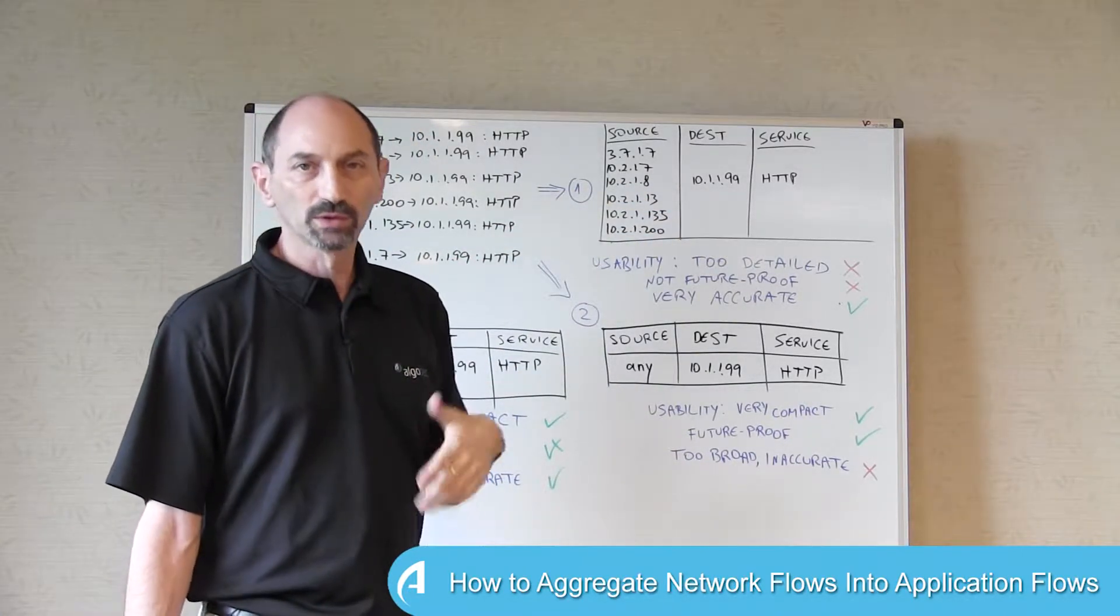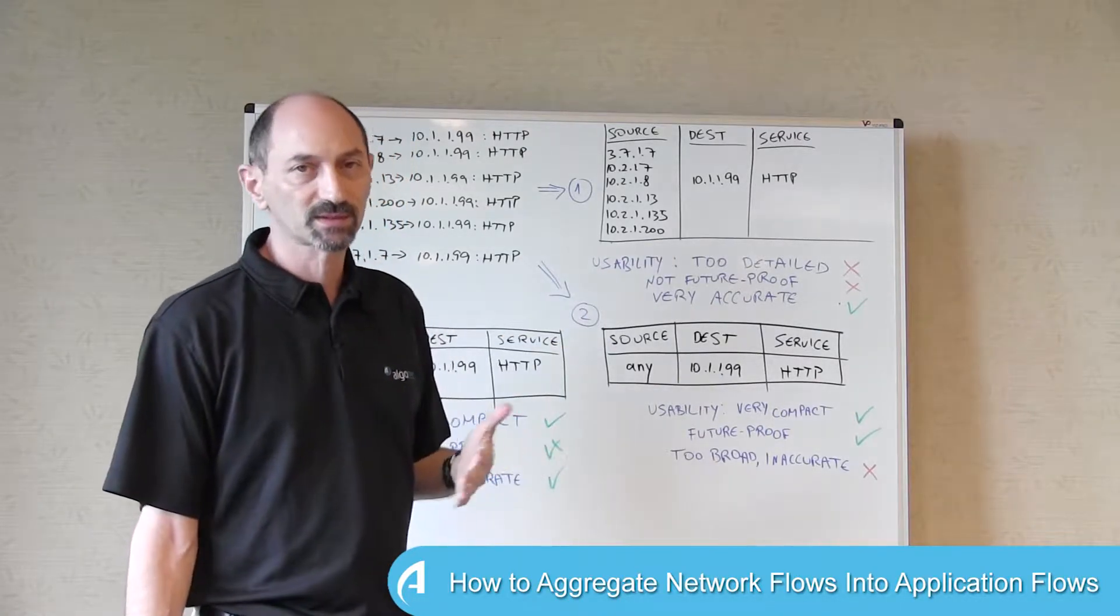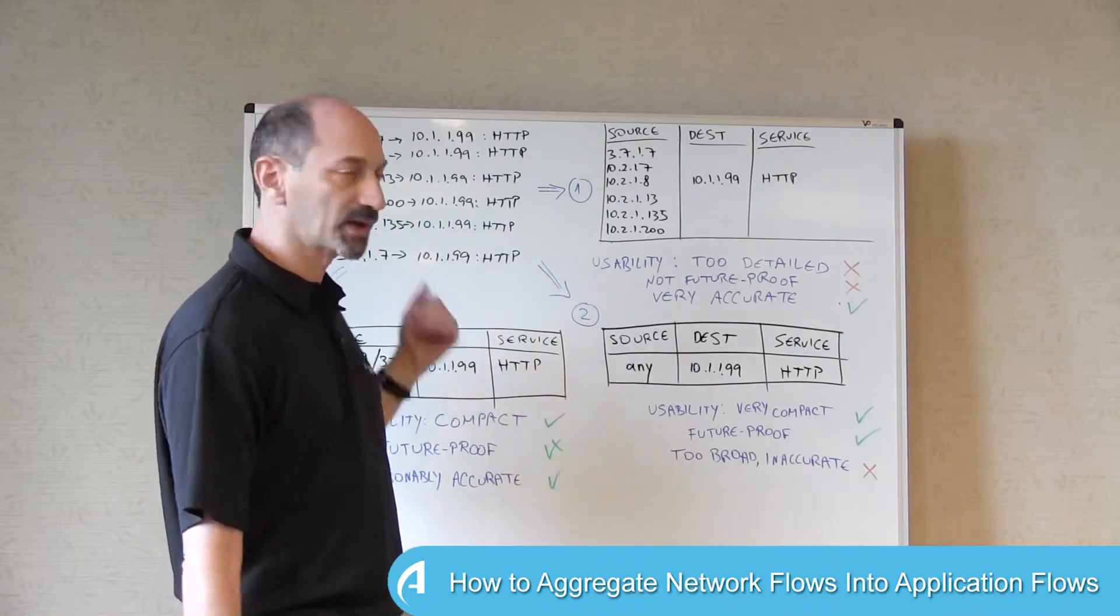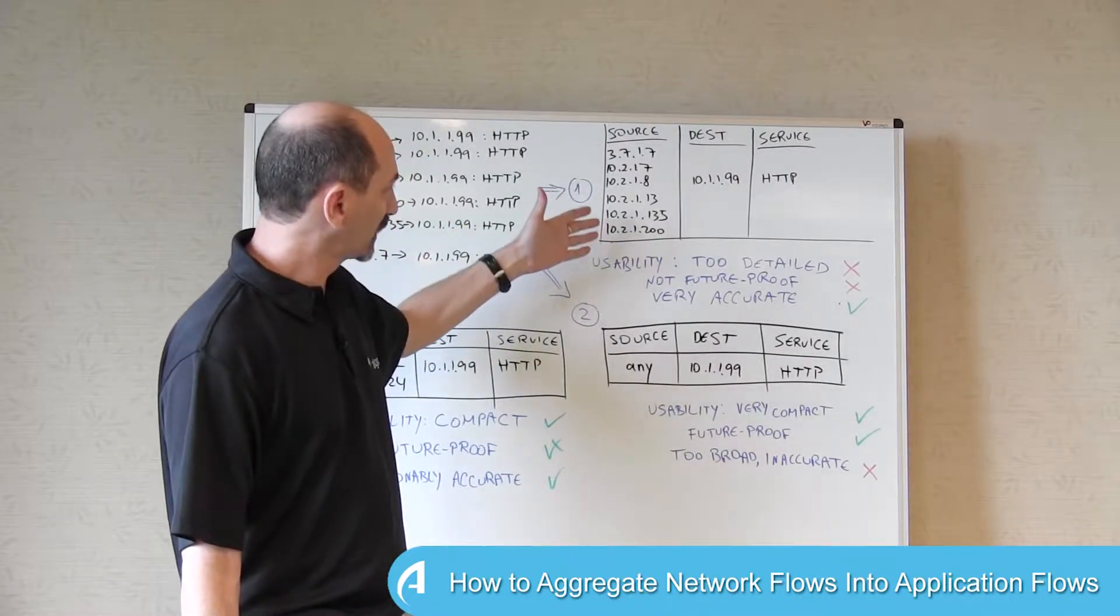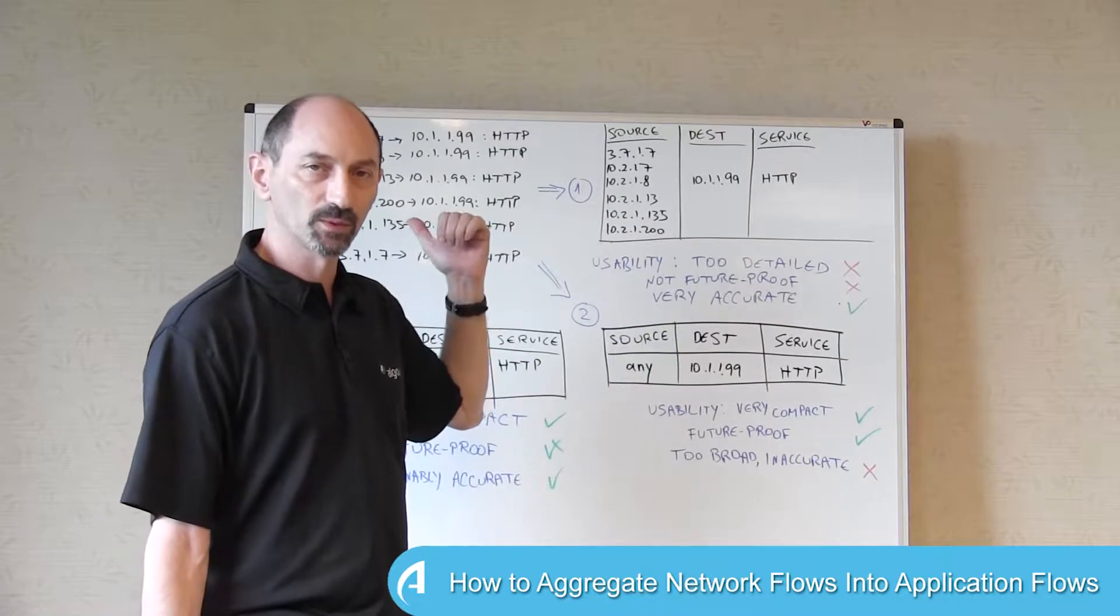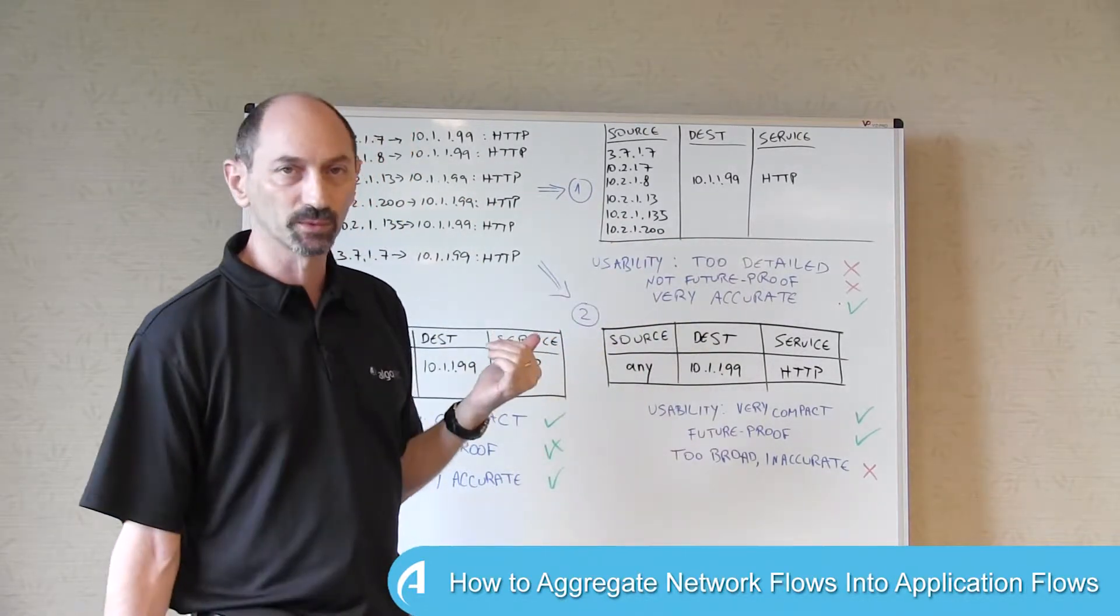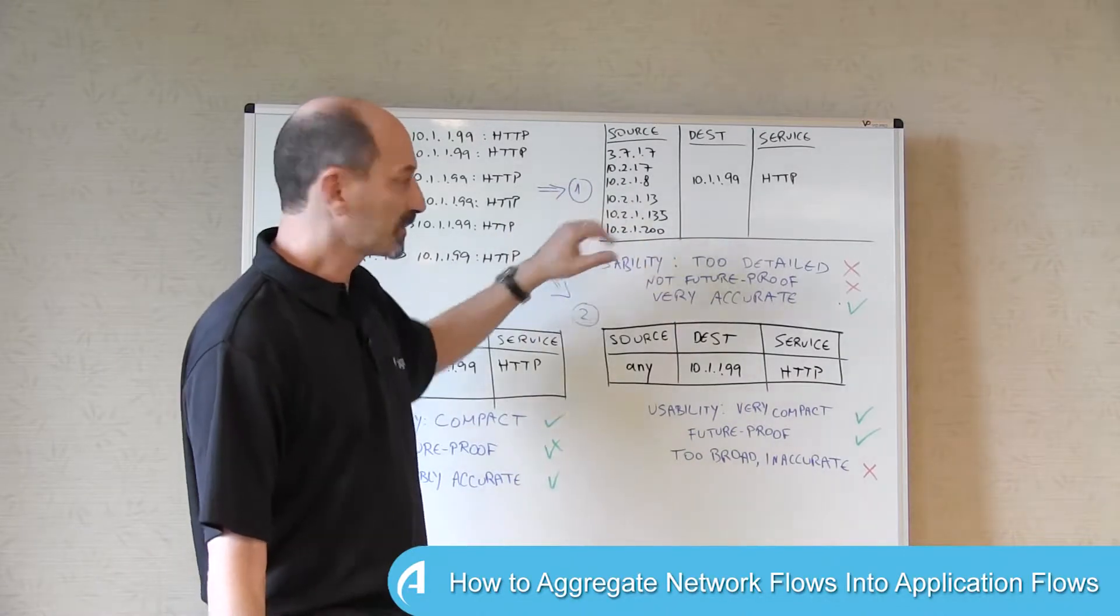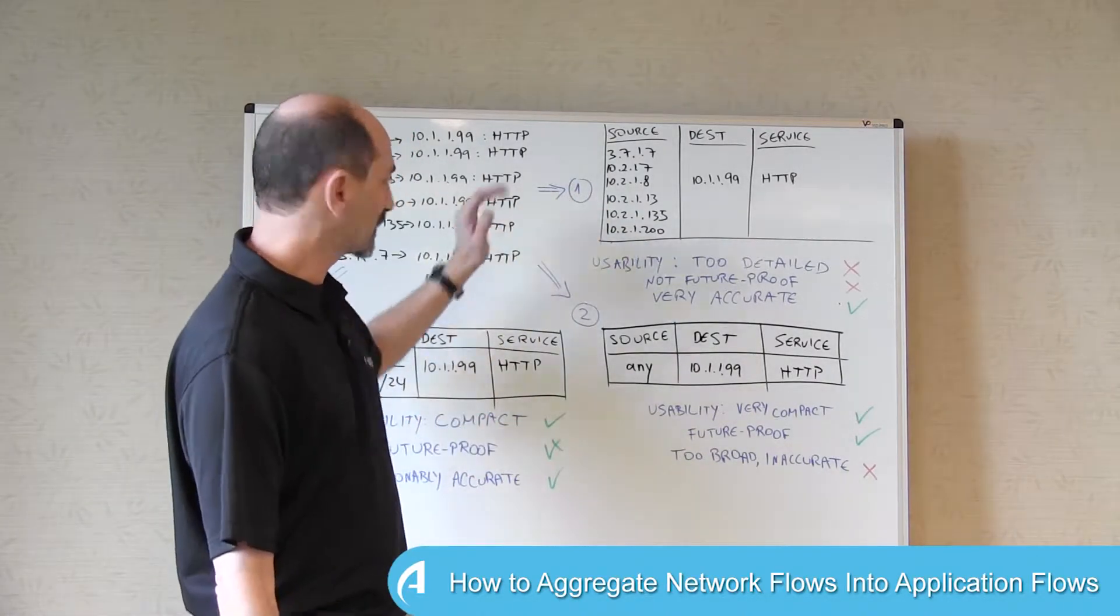They just didn't do so while we were capturing the traffic. And if we restrict ourselves to only the IP addresses that we observed, we get something that is very accurate, but not future proof. So this might not be the best way to represent the flows that we observe.